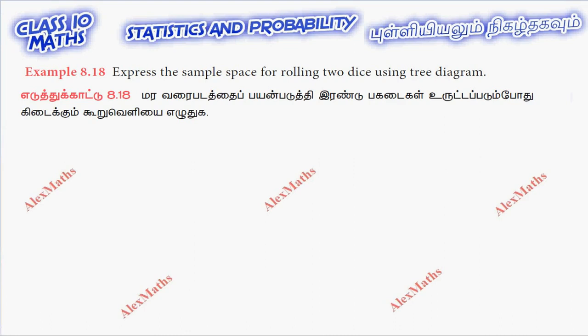Hi students, this is Alex here. Example 8.18: Express the sample space for rolling two dice using a tree diagram.